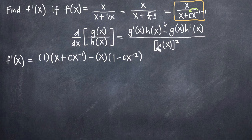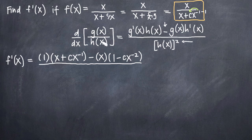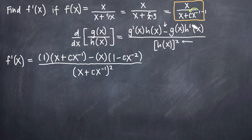According to our quotient rule formula, we put in the denominator of our derivative as our original denominator squared. We take h(x) and square it. Our original denominator is x plus cx to the negative 1, and we square that. Now we've plugged in each piece of our quotient rule formula and finished evaluating all of these pieces. Finding the derivative at this point is just a matter of simplifying as much as we can.